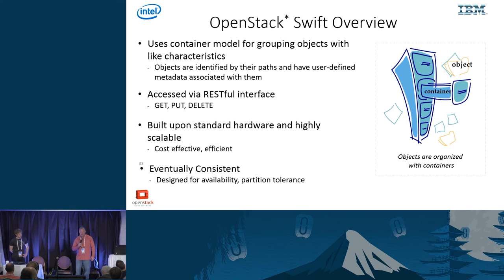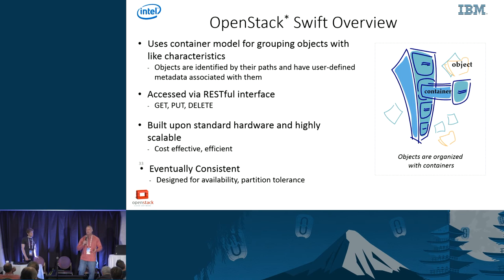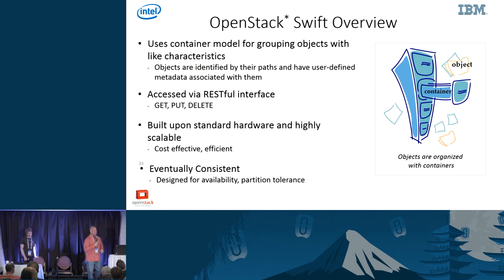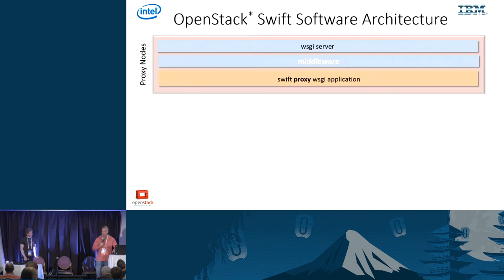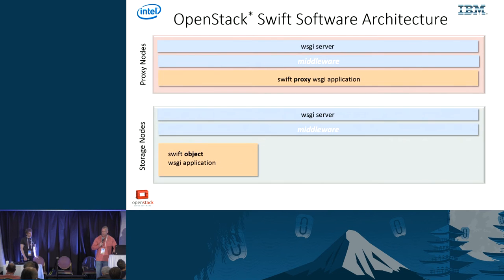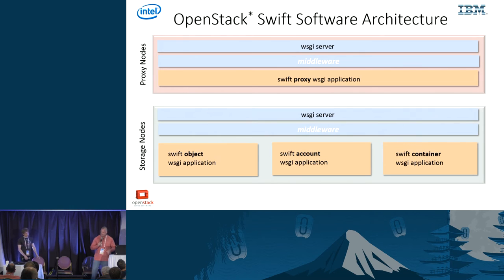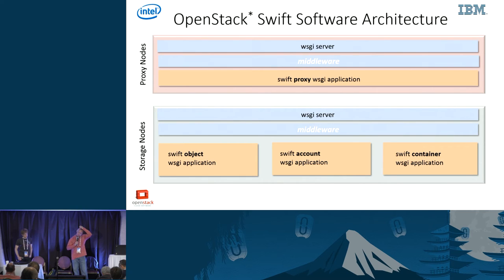Swift is built on standard hardware, highly scalable and efficient — no vendor lock-in required. And it's eventually consistent. When you talk to people for the first time who haven't heard of this, they think it might be a bug. It's not a bug — it's designed to be that way and there are really good reasons for it. Before Hamdi gets into Storelets, I wanted to do a high-level architectural overview of the main modules within Swift — this is important so you can see where Storelets bolts in.